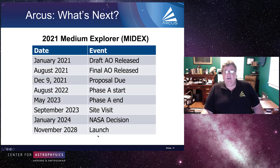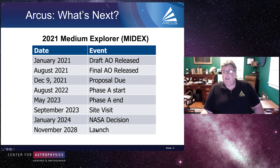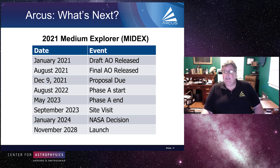If things go well, we would get a Phase A start in August, submit the final proposal around September 2023, and NASA would make a decision in January 2024. If selected, our launch date is currently scheduled for sometime in November of 2028. That might sound far off, but when you're responsible for building an entire spacecraft, November 2028 is coming faster than you might imagine.